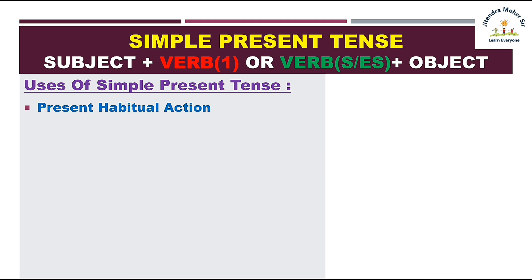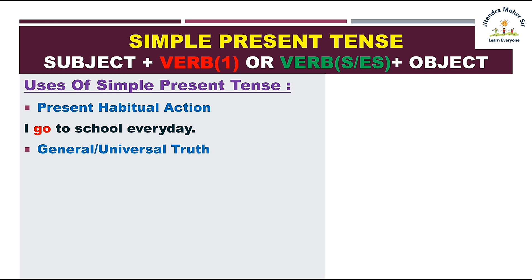Present habitual action dikhane ke liye simple present ka istamal kiya jata hai — jaise koi har roz kya karta hai. Jaise 'I go to school everyday' — yeh meri daily action hai, tab main simple present tense ka istamal kar sakta hoon. Aur general aur universal truth dikhane ke liye bhi simple present tense ka istamal kiya jata hai — jaise 'The sun rises from the east' — yeh general truth hai.